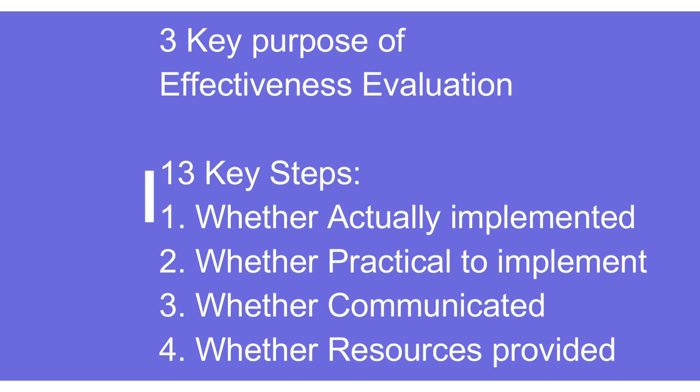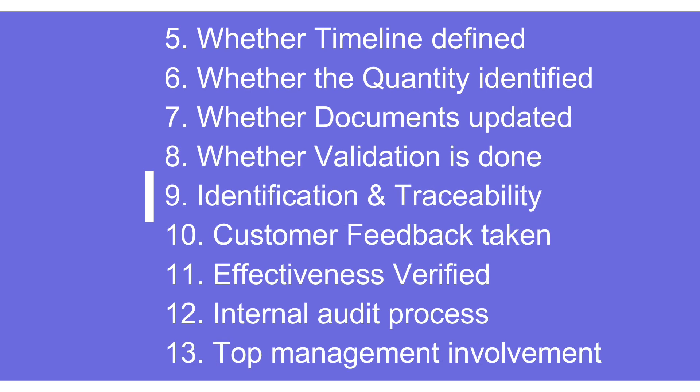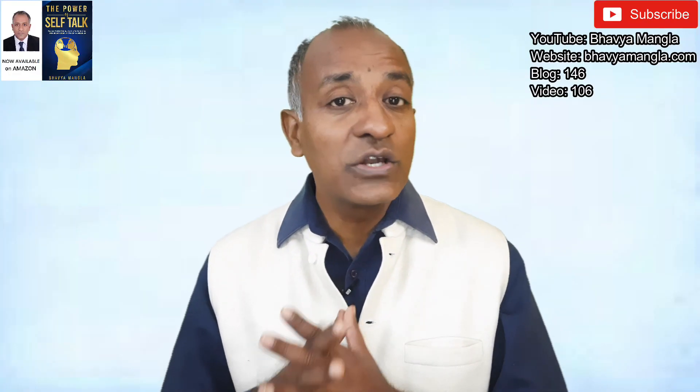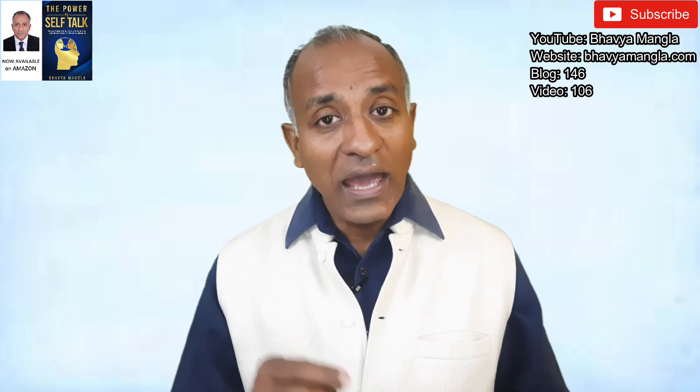In summary, I talked about the three purposes of effective implementation — building confidence, validating the solution, and minimizing risk. Then I covered the 13 steps: whether things are actually implemented, practical to implement, communicated to concerned persons, resources provided, timeline defined, quantity identified, documents updated, validation done after implementation, identification and traceability effectively implemented, customer feedback taken, effectiveness verified over a timeline, internal audit process reviewed, and finally effectiveness verified by top management. If these 13 steps are taken, it is 100% sure the actions will be effective and the customer will be highly delighted.